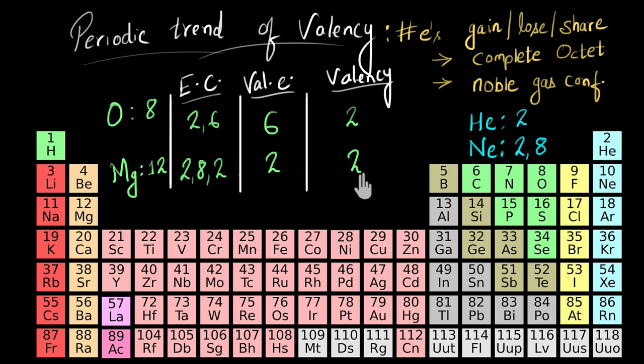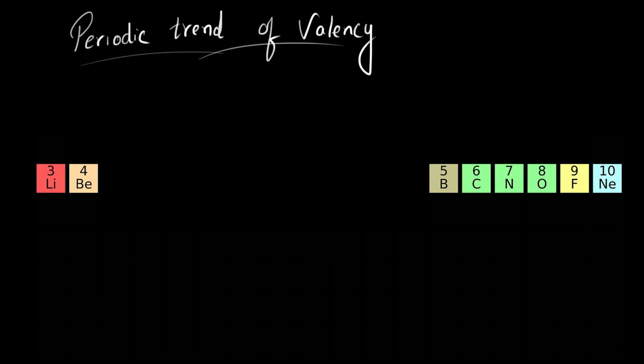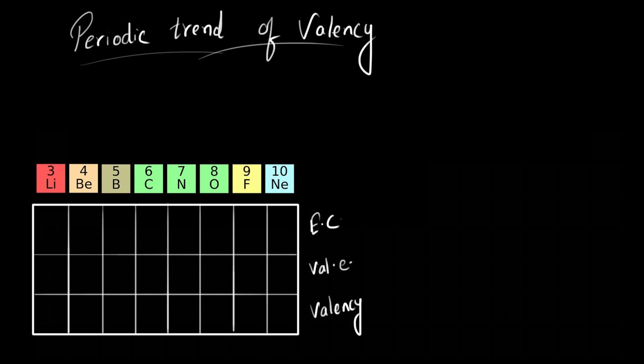Now let's see how the valency varies as we move across a period. Let me focus on period number two and bring these elements close together. Let's try to find out their valencies. For example, lithium has three electrons; its electronic configuration is 2,1. So it has one valence electron and it'll be easier for lithium to lose that valence electron and attain the noble gas configuration of helium. So its valency is going to be one. Can you pause the video and find the valency of all the other elements?